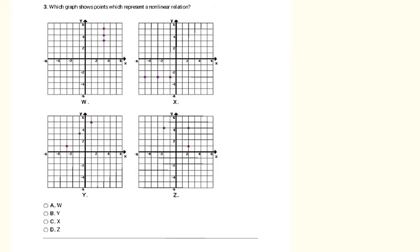Now I'm looking at some examples that have graphs. It can be a little hard to see, but there are points on all of these graphs. The question asks which of these is nonlinear. If I can connect the points in a straight line, it's linear. Graph W — those connect in a straight line, so W is linear. Graph X — straight line, linear. Graph Y — straight line, linear. Graph Z — the points don't connect in a straight line, so Z is nonlinear. The answer is D.